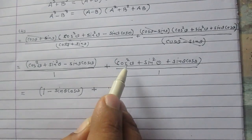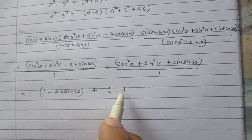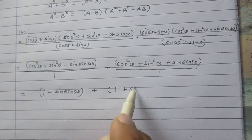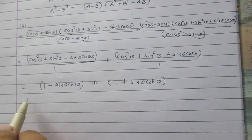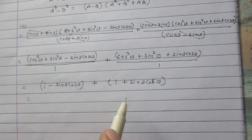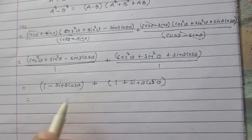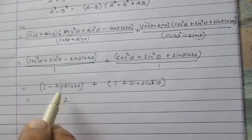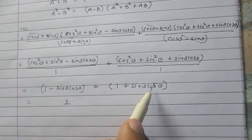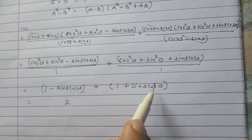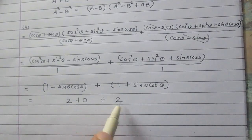Again, cos squared theta plus sine squared theta is one, plus sine theta cos theta. All four terms are added: one plus one gives two, and minus sine theta cos theta plus sine theta cos theta gives zero. So the result is two plus zero, which equals two.